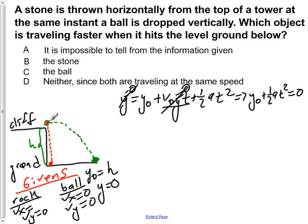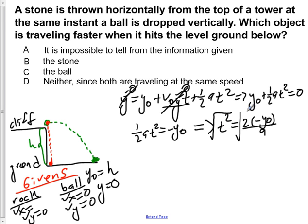We have to solve for the time it takes for this object to fall to the ground. We have ½at² = -y₀. If we multiply by two and divide by a, we get t² = 2(-y₀)/a. Taking the square root of both sides gives us t = √(2(-y₀)/a).